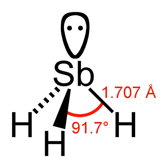Stibine is a chemical compound with the formula antimony-3-hydride. A pnictogen hydride, this colorless gas is the principal covalent hydride of antimony, and a heavy analog of ammonia. The molecule is pyramidal with HSbH angles of 91.7 degrees and SbH distances of 170.7 pm.